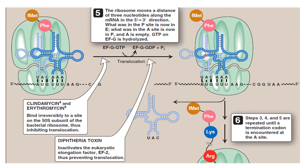After translocation, the E-site contains the empty tRNA, the P-site contains the peptidyl-tRNA bound to the growing peptide, and the A-site is empty for the incoming tRNA. The polypeptide chain continues to grow by repeating all these steps until the ribosome enters the termination phase.